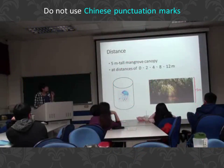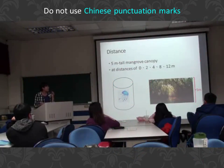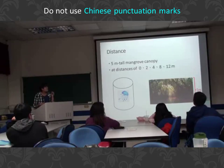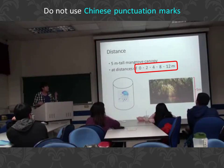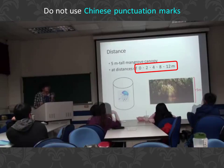To test whether they can detect the 5-meter tall mid-group canopy at different distances — at 0 to 4, 8, and 12 meters — it is relatively small, but it is very secure.